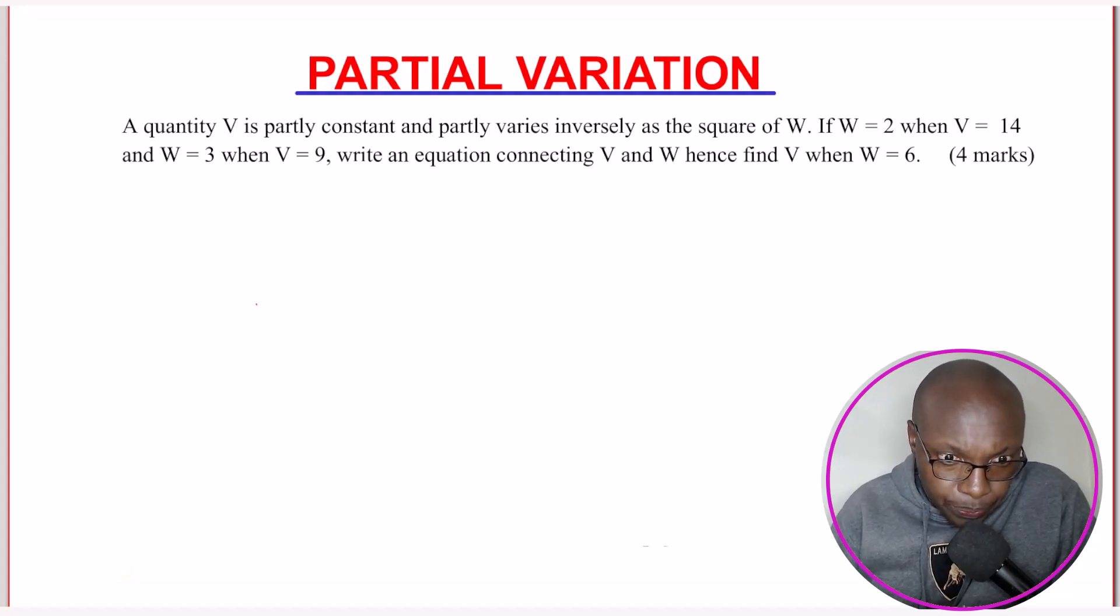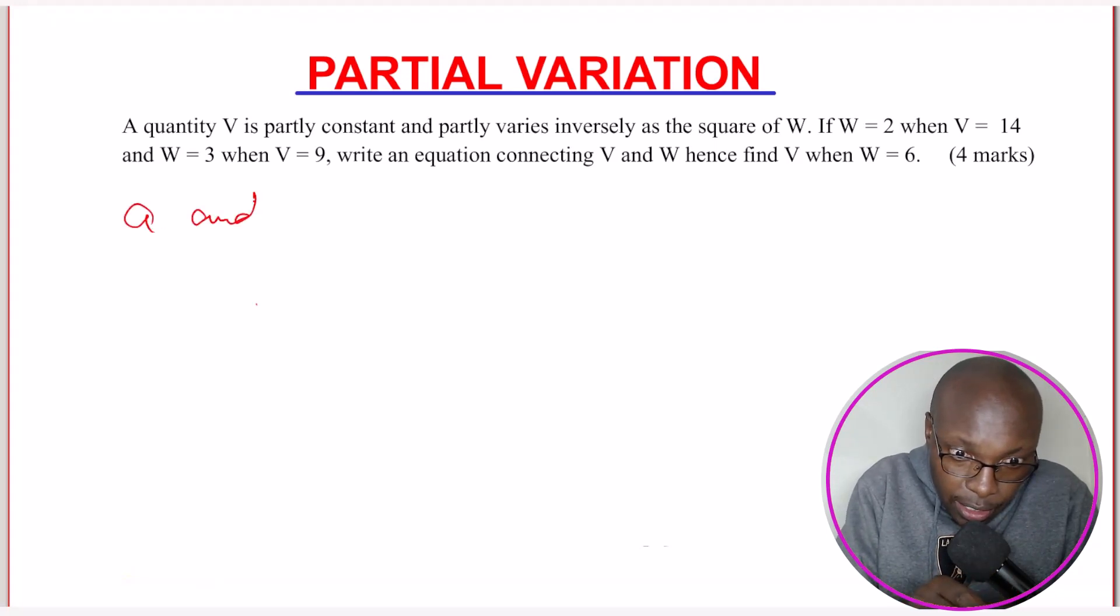Let's go to the solution. Before we begin, I will choose the constants that I'm going to use because in partial variation you normally use two constants. I will choose the constants to use as A and B. So A and B will be my constants.